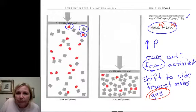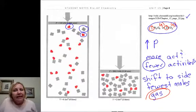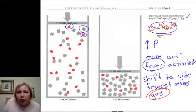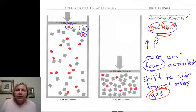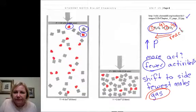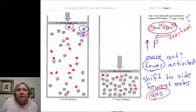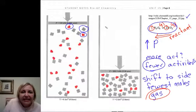This side has one mole of gas and this has two. So, an increase in pressure would shift to the reactant side. So what we would say is we would form reactant.